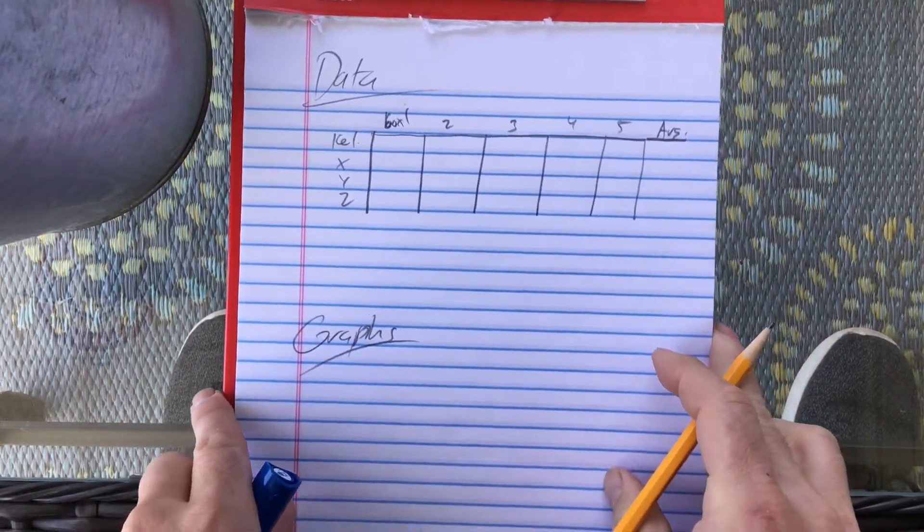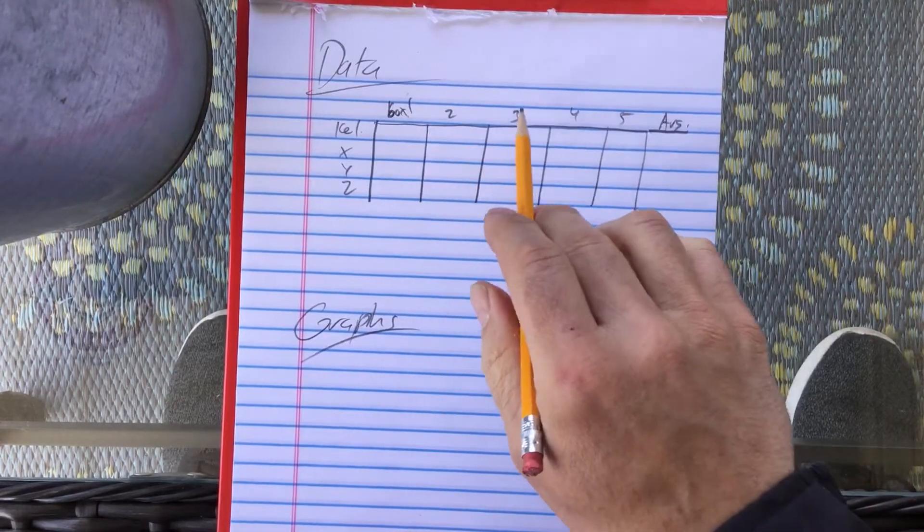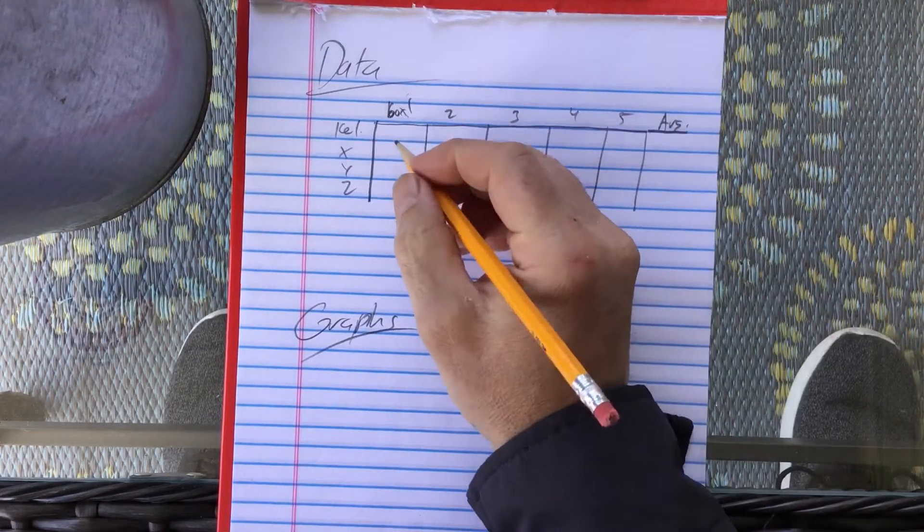Am I off the screen there? I think I am. Okay. So box one, two, three, four, five, and average.